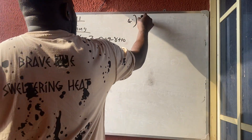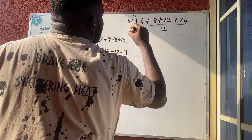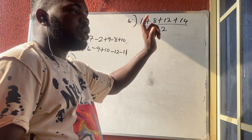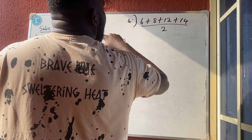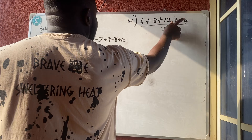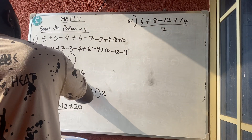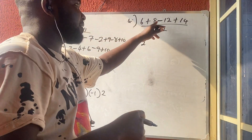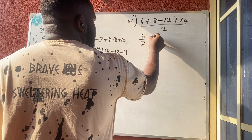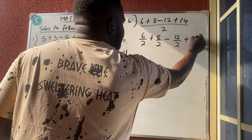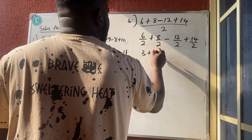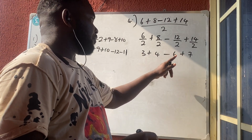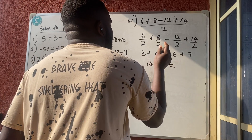Number 4: six plus eight plus twelve plus fourteen, all divided by two. In division, if addition or subtraction separates the terms, you cannot divide just one term by two — you must divide every term by two. So: six divided by two, plus eight divided by two, minus twelve divided by two, plus fourteen divided by two gives three plus four minus six plus seven.